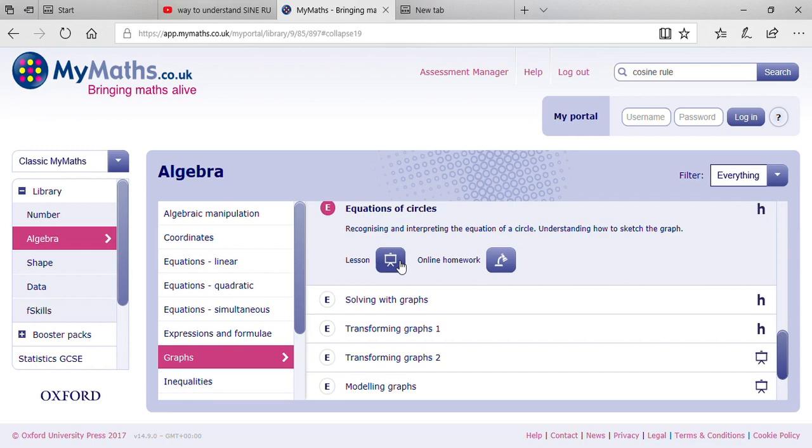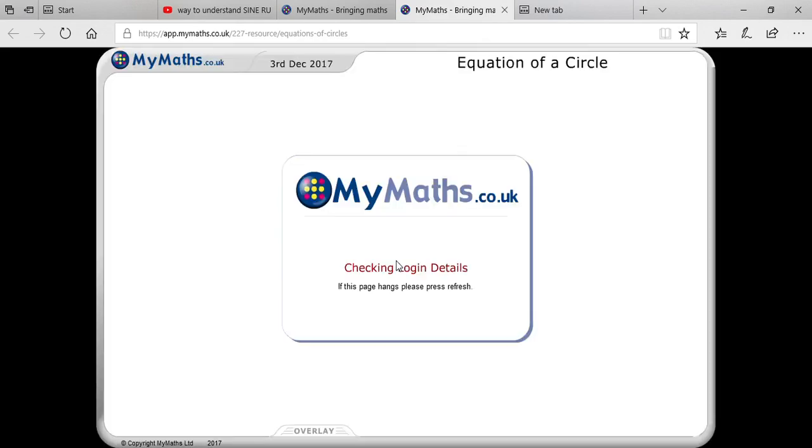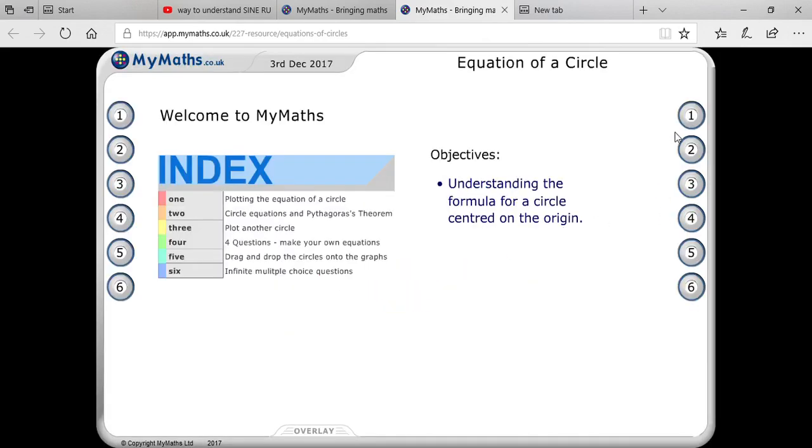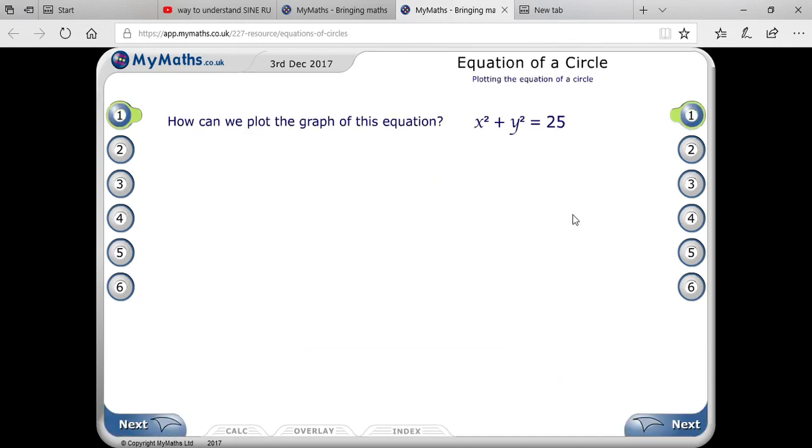Let's start. Always remember that the equation of a circle is x² + y² = a², where a is your radius.